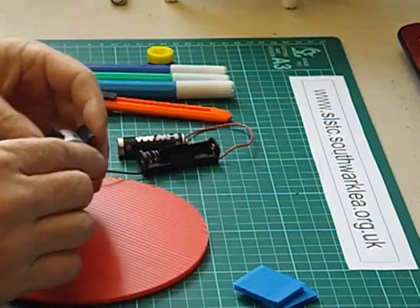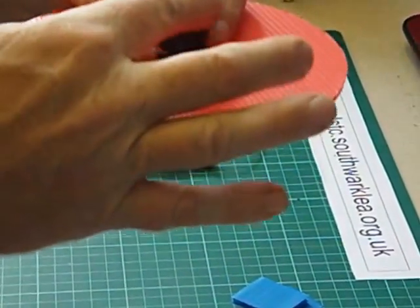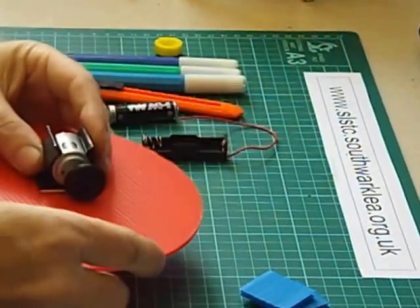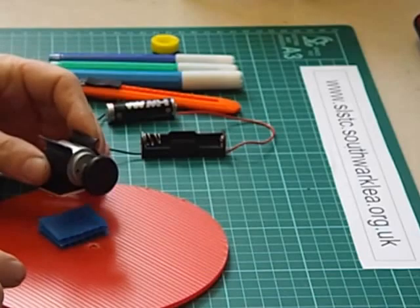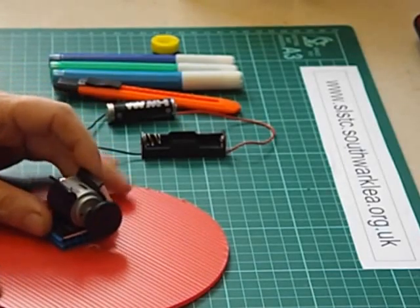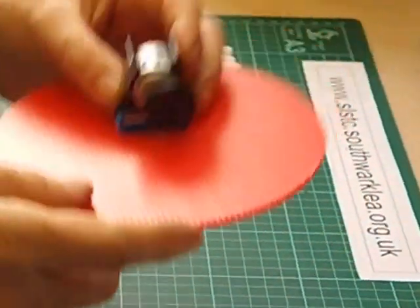Now if we stick this down there won't be room for the cam to turn all the way around. So we just need to glue a little platform there and then we're going to fix the motor clip onto there. So now it's got room for the cam to go round.